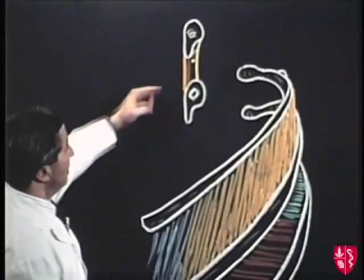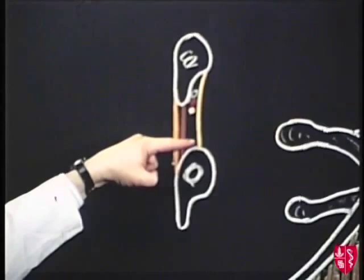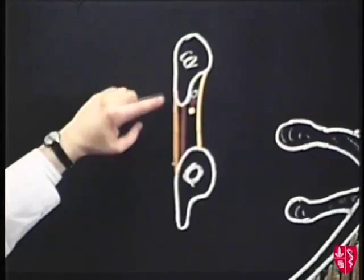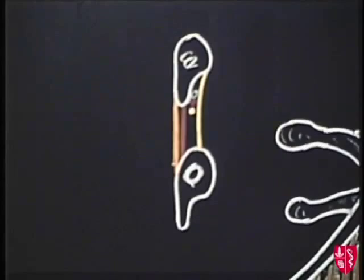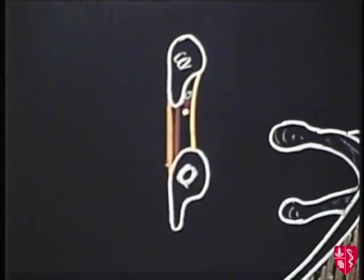It is thus seen that if you were to pass a needle through an intercostal space, providing you keep near to the upper border of the rib, you're unlikely to damage an intercostal nerve. However, if you pass close to the lower border of the rib, you might well damage an intercostal nerve, and this would result in paralysis of the intercostal muscles, and in the lower intercostal nerves, if damaged, would also result in paralysis of the abdominal muscles.